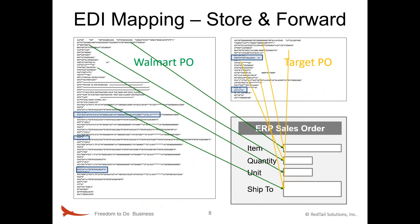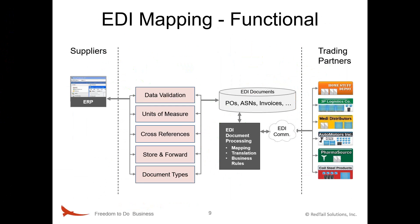Looking at those orders again, the data in the blue highlighted fields is that store-and-forward information that must be kept somewhere — either in or outside the ERP — and then retransmitted for subsequent documents. That store-and-forward capability is something you really have to figure out based on the capabilities of your own ERP system and any additional custom programming you might need to do.